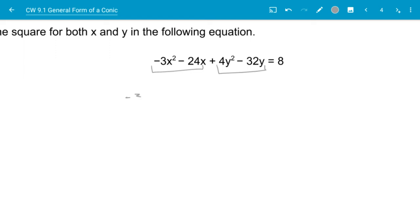we're going to factor out a negative 3. That will give me x squared. And negative 24 divided by negative 3 is going to be a positive 8x. And then I have what I'm going to add in there to complete my square. And again, I have to remember that whatever number I put in here at the end is going to be multiplied by a negative 3.